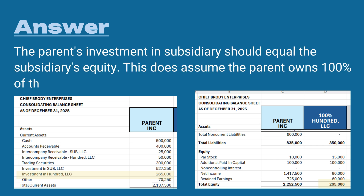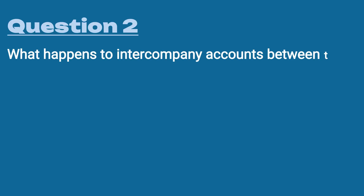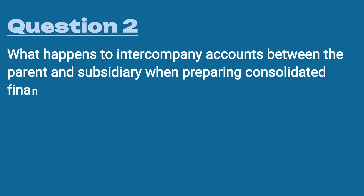This assumes the parent owns 100% of the subsidiary. In this example, Parent Incorporated owns 100% of the investment in 100 LLC. If you switch over to 100 LLC's balance sheet, the equity section of 100 LLC will equal the investment in 100 LLC on Parent Incorporated's books.